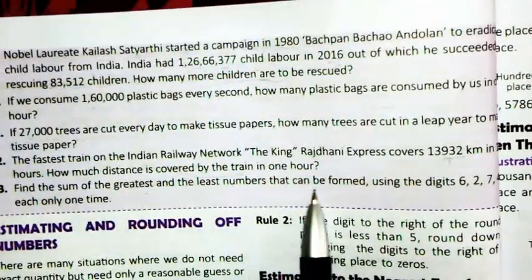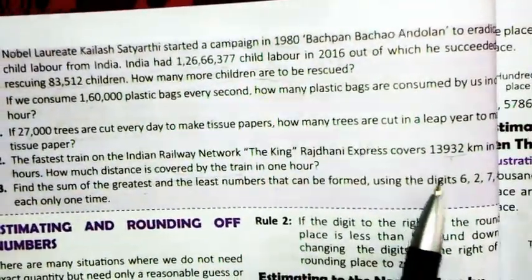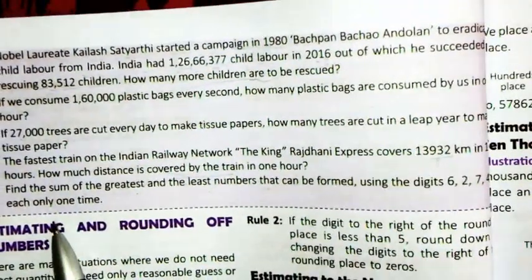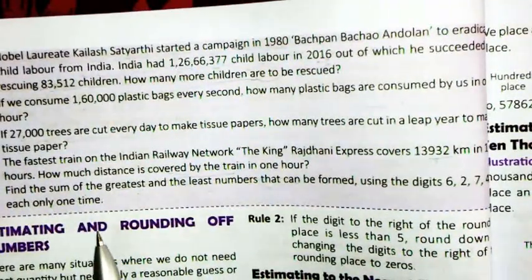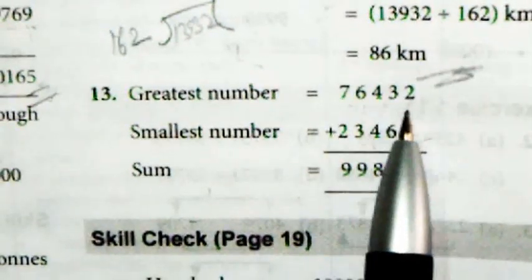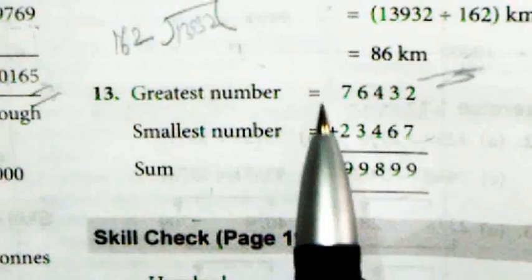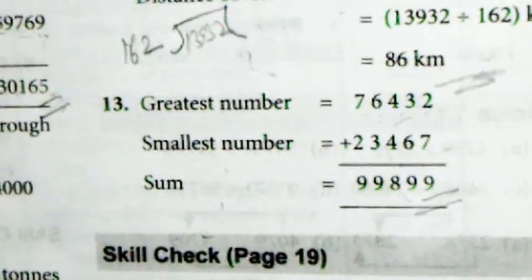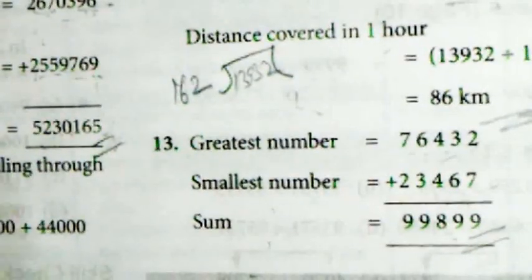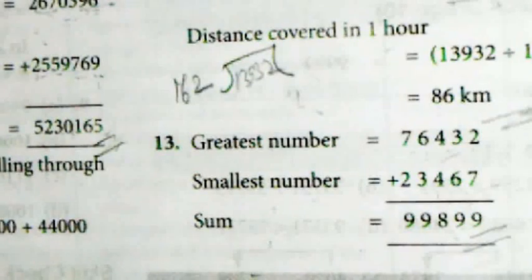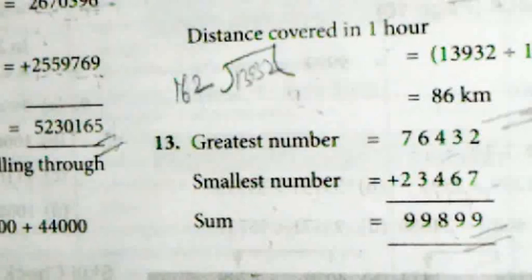Last sum: find the sum of the greatest and least numbers that can be formed using digits 6, 2, 7, 4, 3, each only once. Greatest number = 76,432. Smallest number = 23,467. Add both to get the final answer. I hope you all understand this exercise. Please do the complete exercise in your fair notebook with neat and clean handwriting. Thank you, have a nice day!